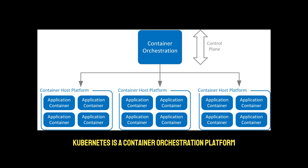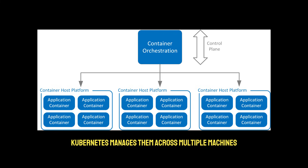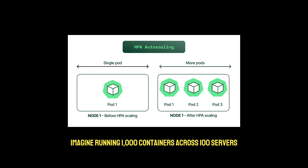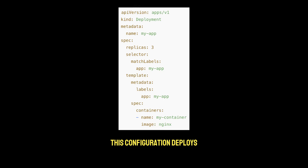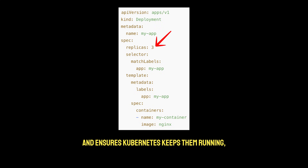Kubernetes is a container orchestration platform. Once you have containers, Kubernetes manages them across multiple machines. It handles scaling, load balancing, and self-healing. Imagine running 1,000 containers across 100 servers — Kubernetes makes that possible. This configuration deploys three replicas of a containerized app and ensures Kubernetes keeps them running, scaling them as needed.